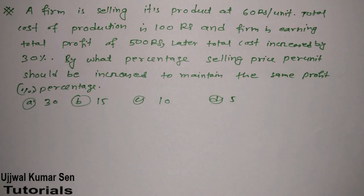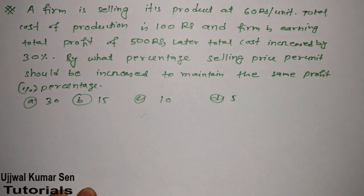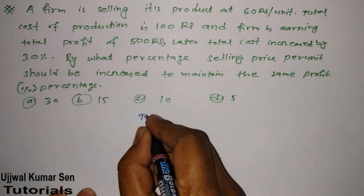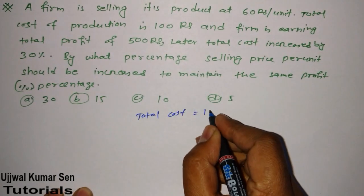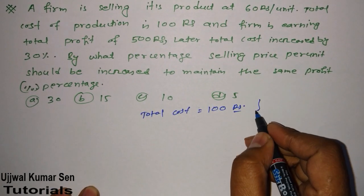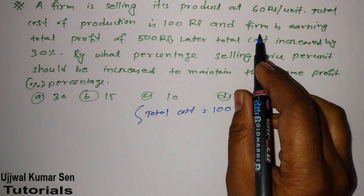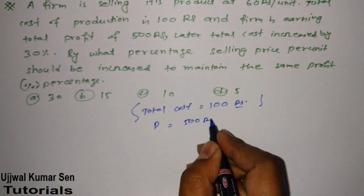In this question they have said a firm is selling its product at 60 rupees per unit. Total cost of production is - here's the thing to notice - total cost is equal to 100 rupees. And the firm is earning a profit of 500 rupees.